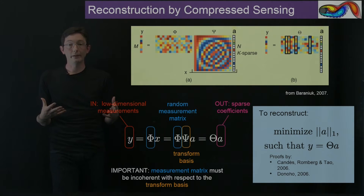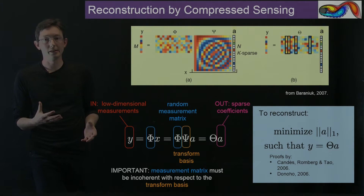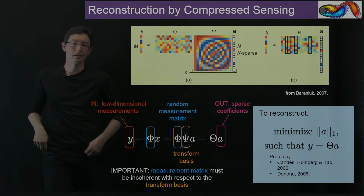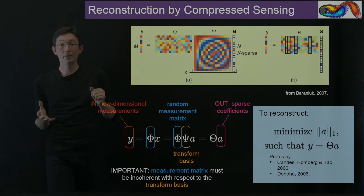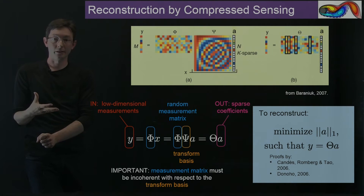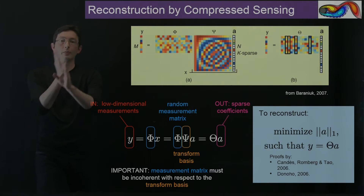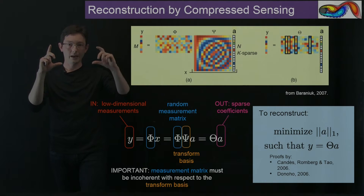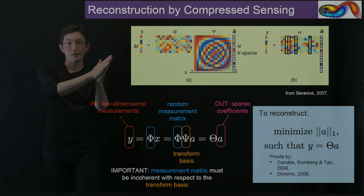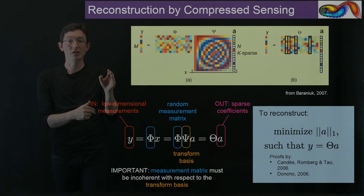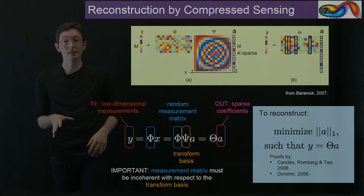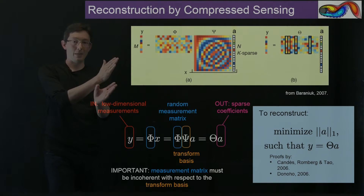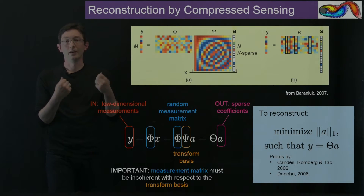A brief overview of compressed sensing theory: many high-dimensional signals in the real world — like big fluid velocity field vectors or megapixel images — are very high-dimensional, but if you write these vectors in an appropriate transformed basis, they turn out to be very sparse. This is the entire idea behind image compression: take a megapixel image, Fourier transform it, and most of the Fourier coefficients are small and can be zeroed out. Lots of signals — audio, movies, fluid fields — are sparse in a transformed basis, allowing massive compression of the data you need to keep track of.